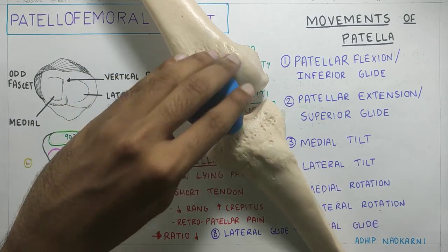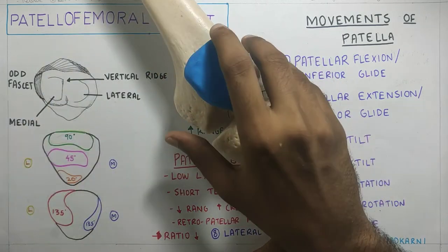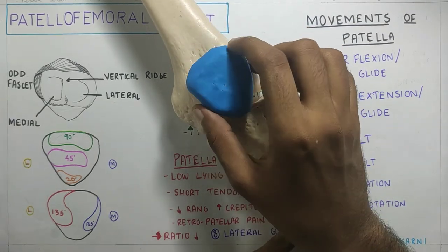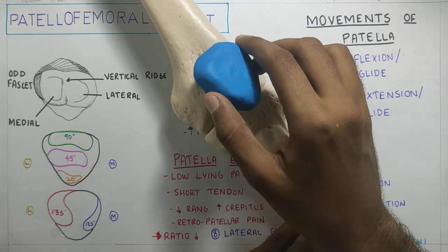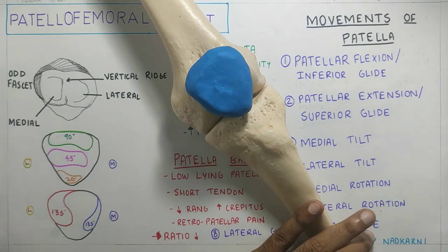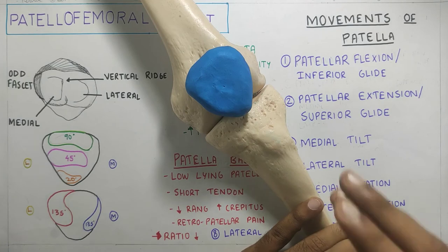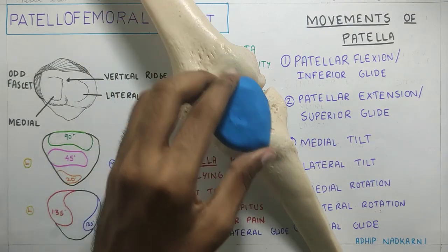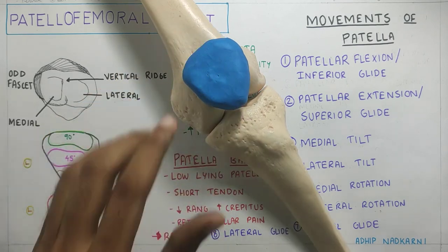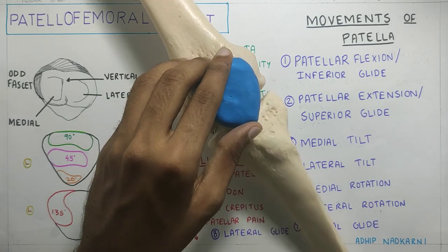During tibial rotation, the patella moves along with the tibia causing medial and lateral rotation. During relative movement of the femur, the patella tilts medially and laterally along the longitudinal axis. All these glides are very important to carry out normal function at the knee joint. If the patella fails to glide in any direction, it impacts knee function.